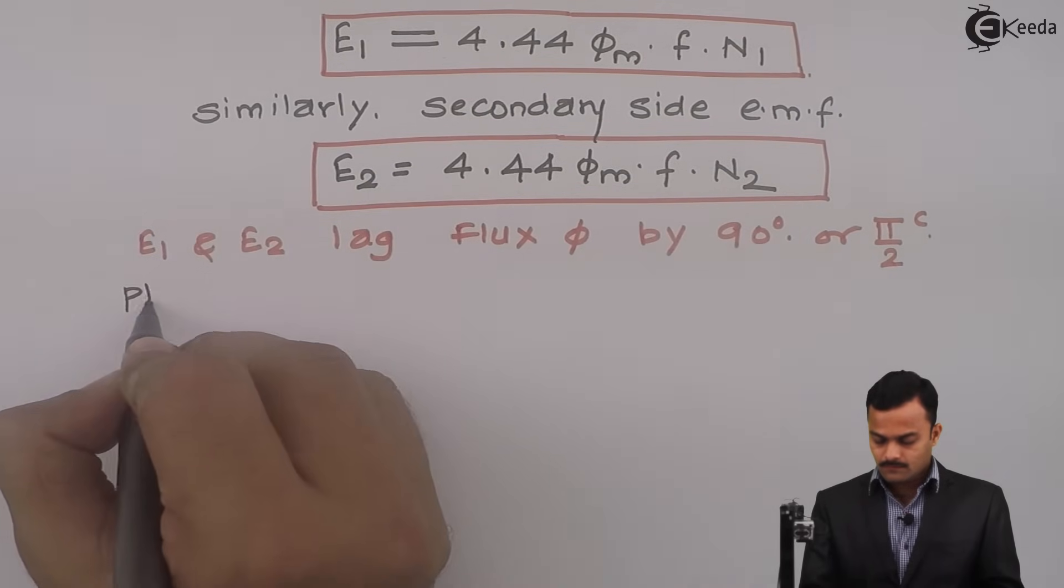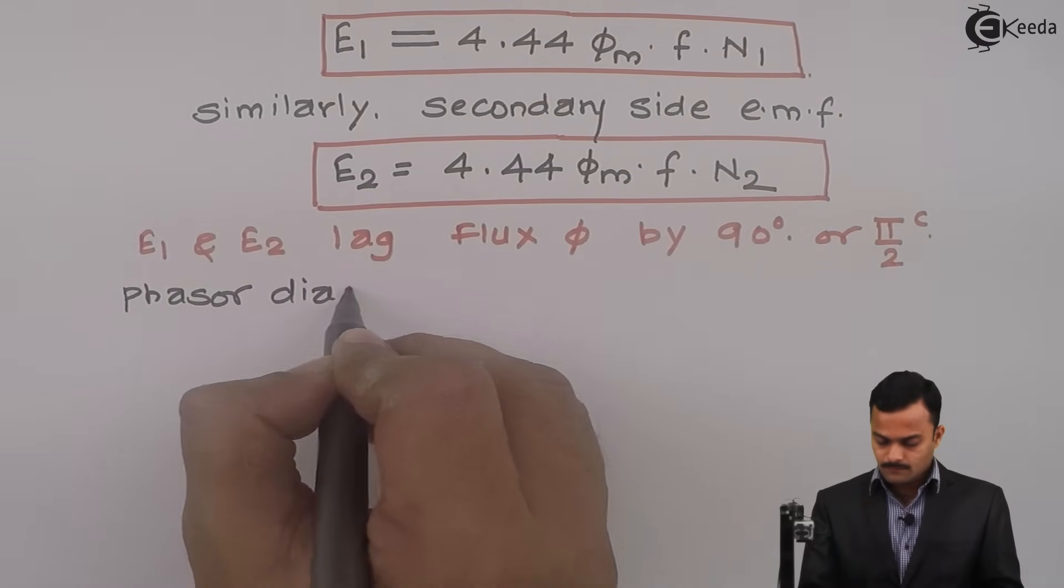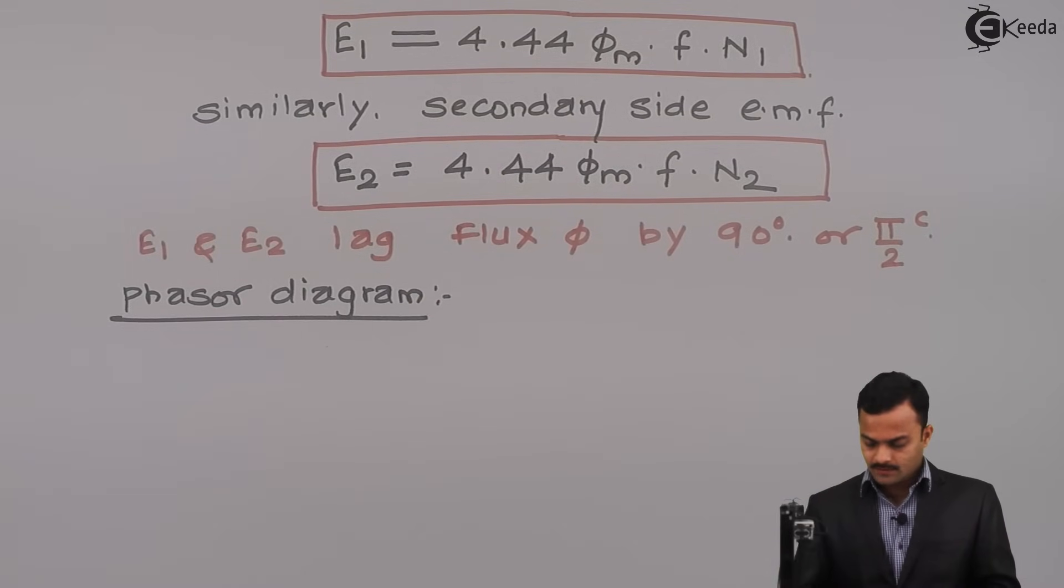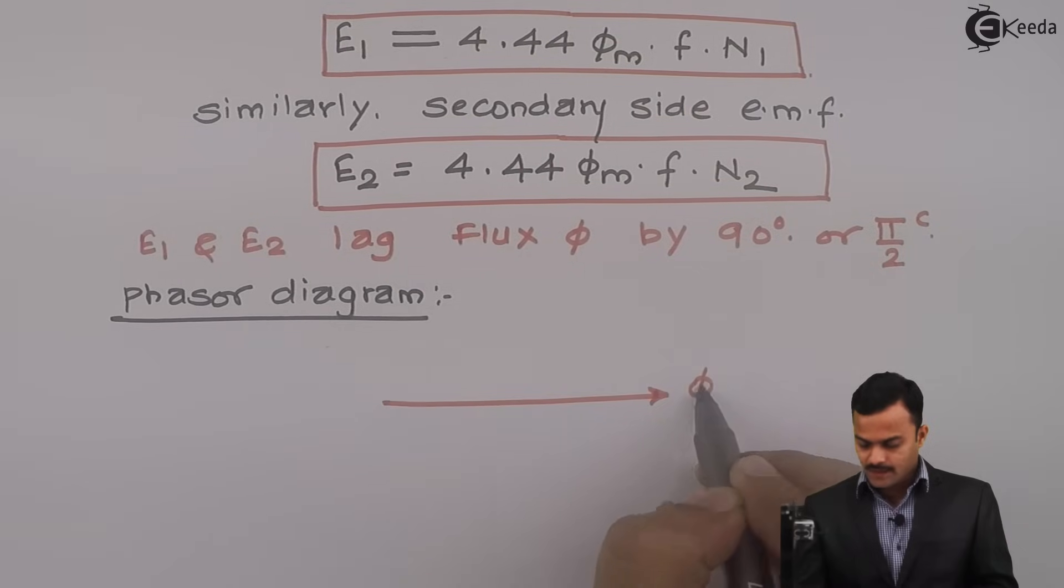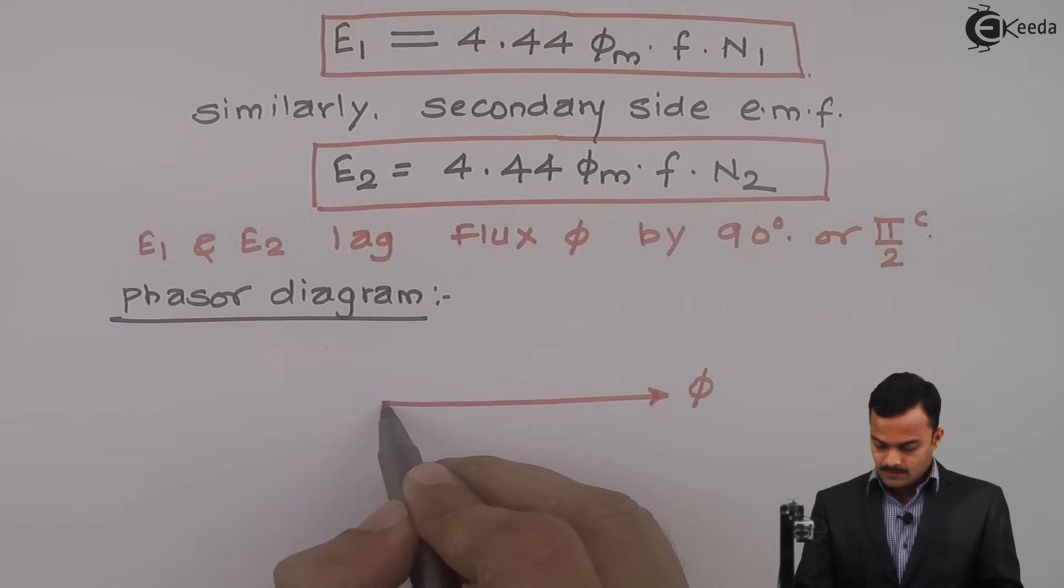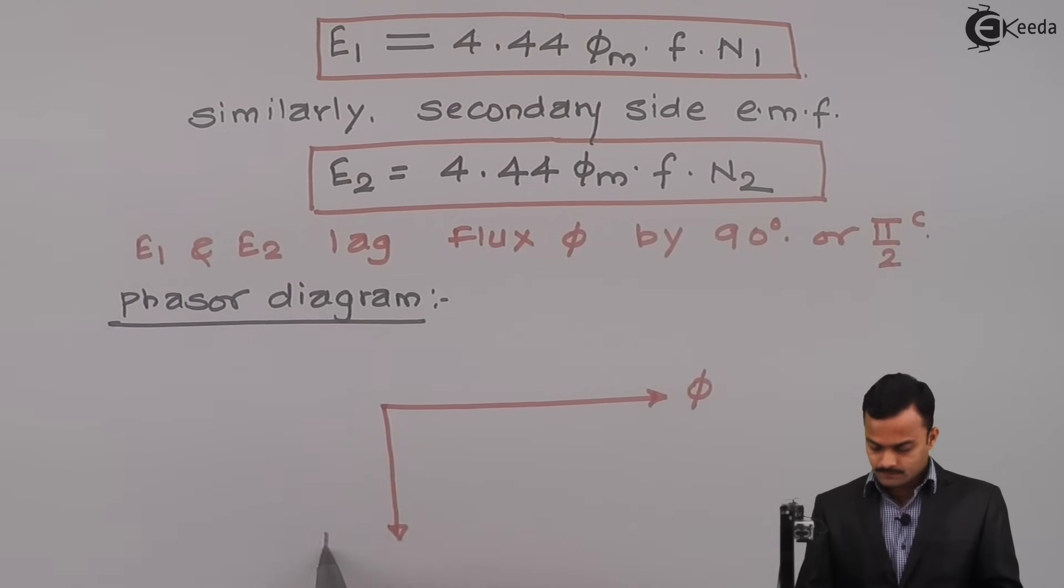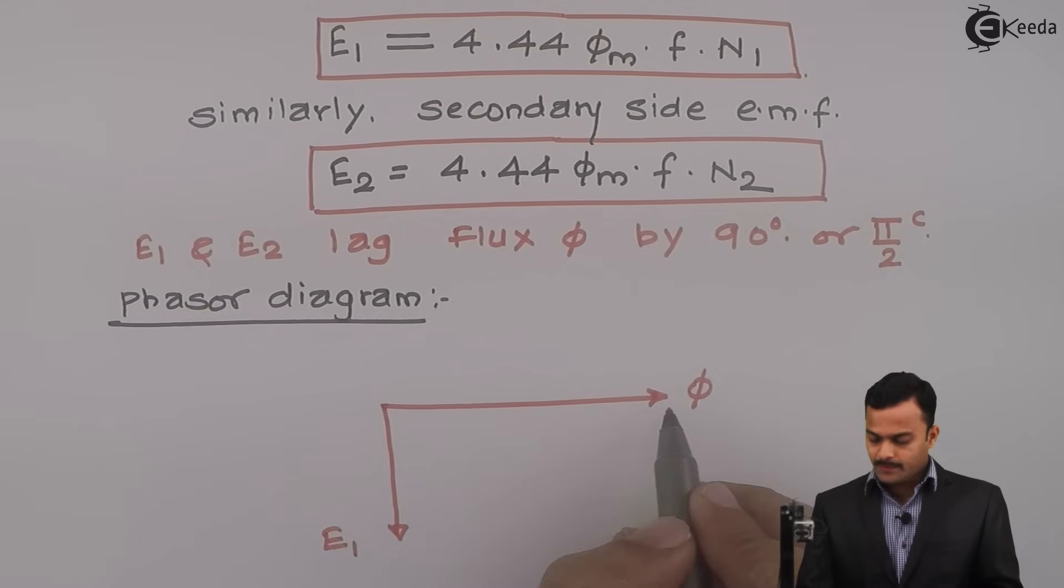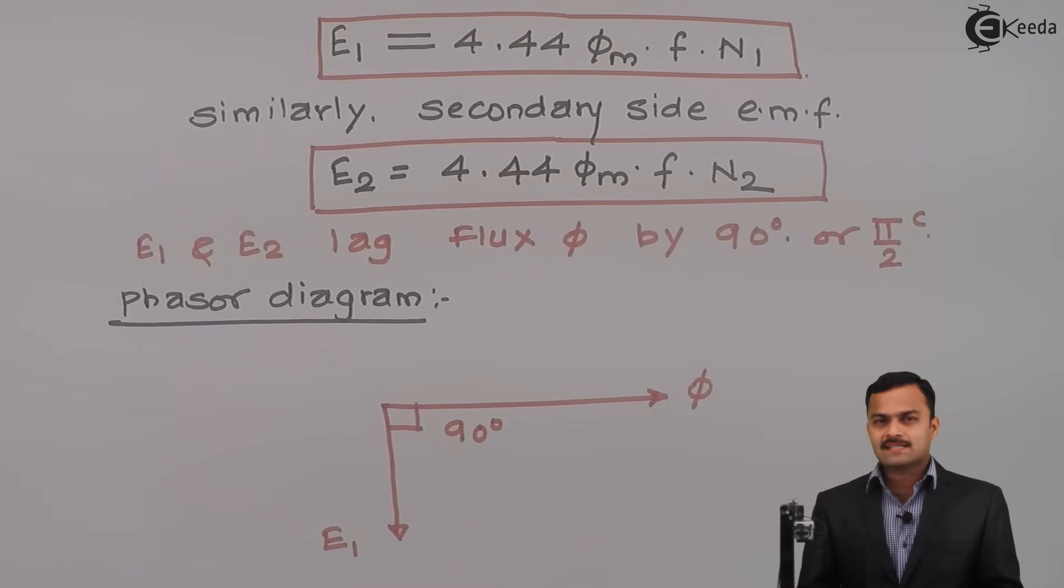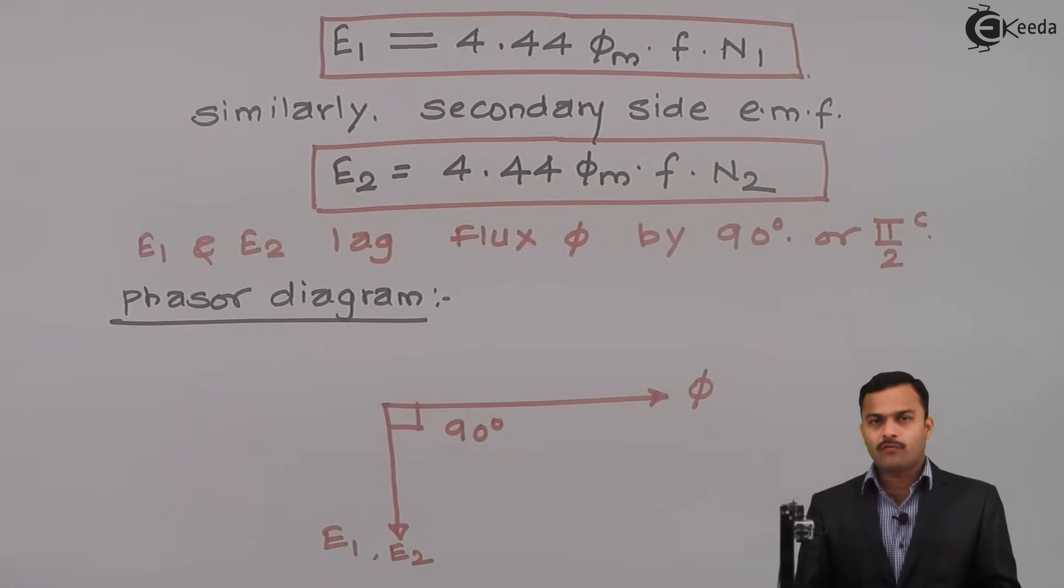If you draw a diagram, it will be like this. Reference is flux phi and EMF induced because of this flux phi is at the primary side. So that will lag behind this phi by 90 degree. Similarly, same flux phi is linking with secondary winding. Hence, EMF 2 will also lag behind this phi by 90 degree.